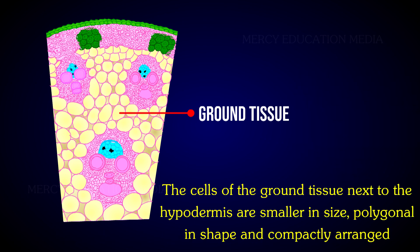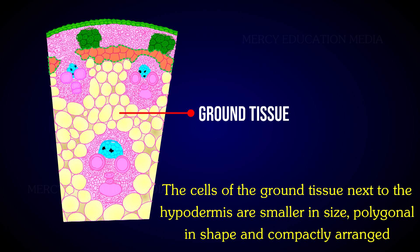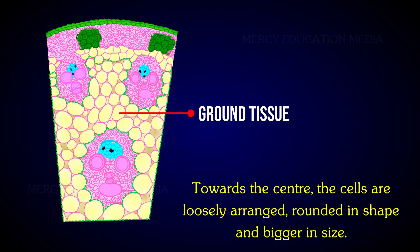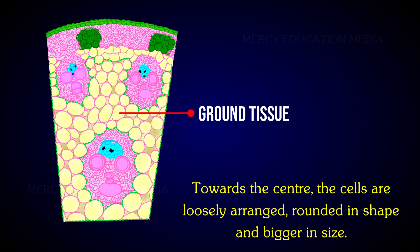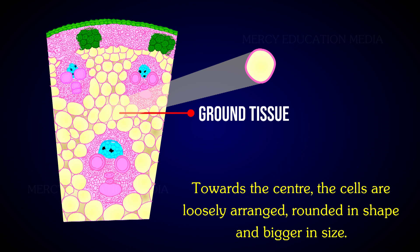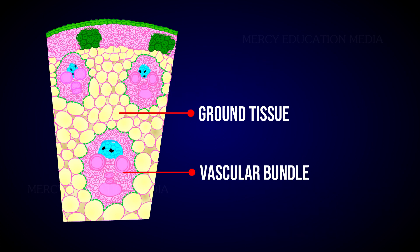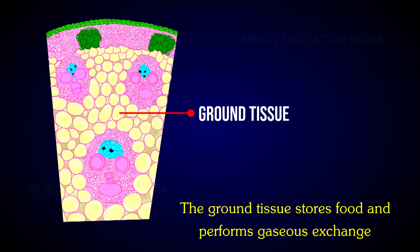The cells of the ground tissue next to the hypodermis are similar in size, polygonal in shape, and compactly arranged. Towards the center, the cells are loosely arranged, rounded in shape, and bigger in size. The vascular bundles lie embedded in this tissue. The ground tissue stores food and performs gaseous exchange.